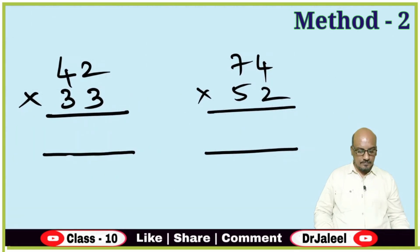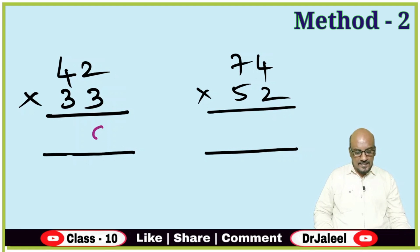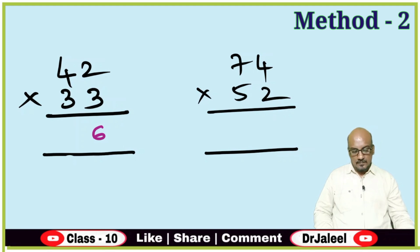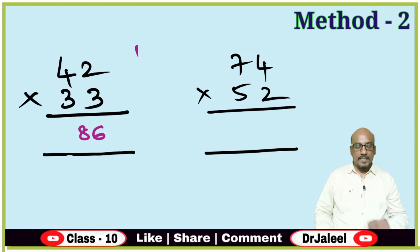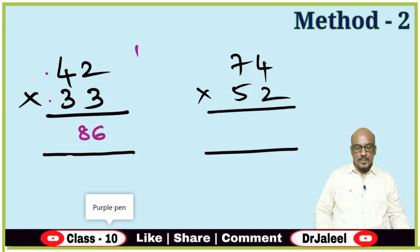Let us have two more examples — 43 × 32. Right side digits: 3 × 2 is 6. No carry forward. Cross multiplication: 3 × 4 is 12 and 2 × 3 is 6. 12 plus 6 is 18 — write 8 here and carry forward 1. Left side digits: 3 × 4 is 12, plus 1 carry forward is 13. So the answer is 1386.